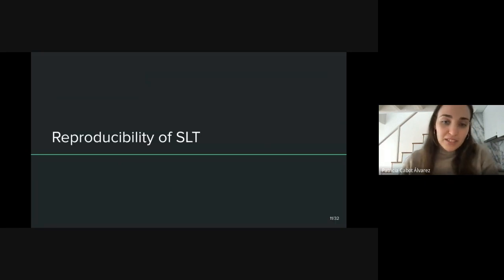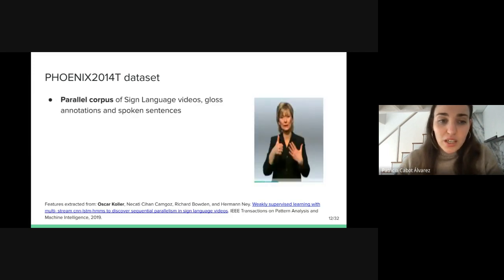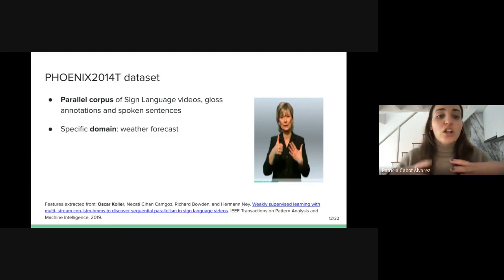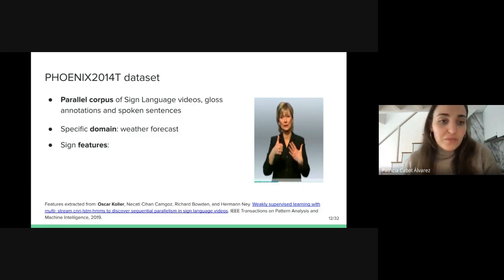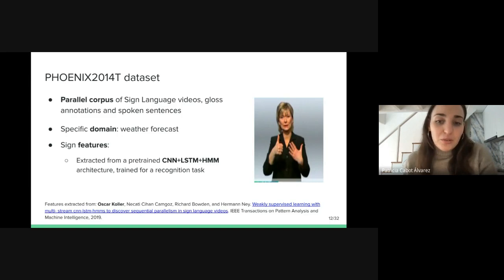I will explain the reproducibility of the model with the original setup. First, I will present the dataset they used: Phoenix. This dataset consists of a parallel corpus of signed videos, gloss annotations, and spoken sentences. It belongs to a specific domain — weather forecast — because all videos were gathered from German public TV. Besides, this dataset published by the authors, along with the code, does not contain the raw video frames but contains sign features that were already extracted. The authors mentioned that they extracted these features from a pre-trained network following a CNN-LSTM-HMM architecture, trained on a recognition task on the same Phoenix dataset.